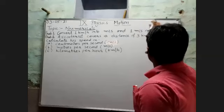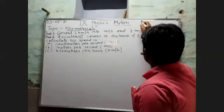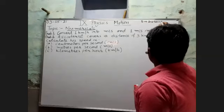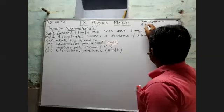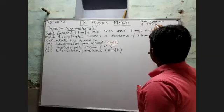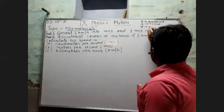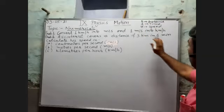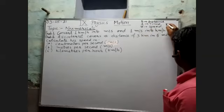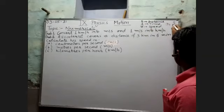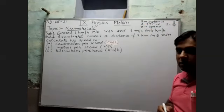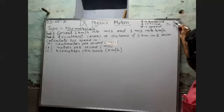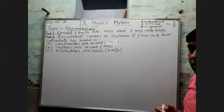There are some symbols we are using: s for distance, r for displacement, t for time, and v for speed or velocity. The formula for speed is v equals s divided by t — distance divided by time.